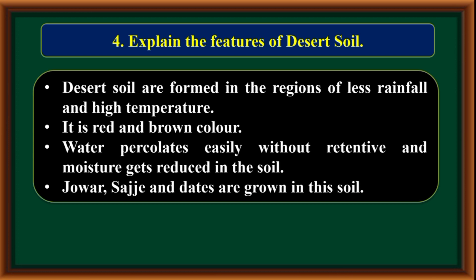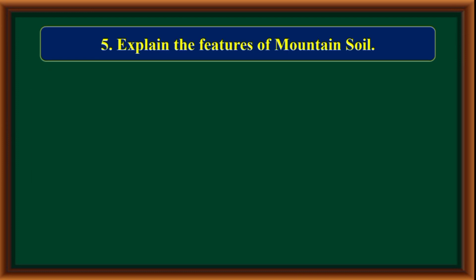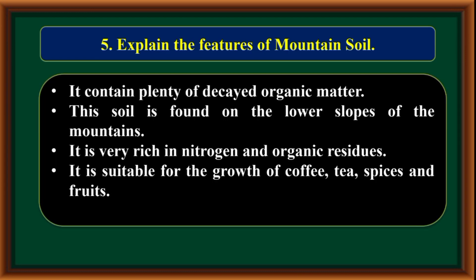Explain the features of desert soil. Desert soils are formed in regions of less rainfall and high temperature. They are red and brown in color. Water percolates easily without retention, and moisture gets reduced in the soil.